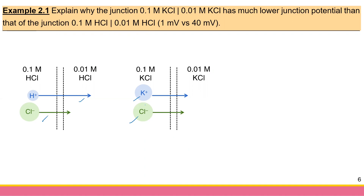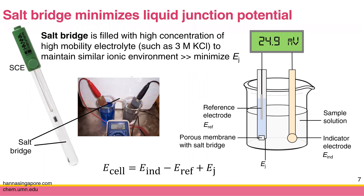There is one way to minimize junction potential: use a salt bridge filled with a high-concentration, high-mobility electrolyte such as 3 molar KCl — an electrolyte with similar-sized ions like potassium and chloride. The reference electrode has a reservoir at the end that can be filled with this high-concentration KCl solution. Similarly, in a cell with liquid junction you also put a salt bridge with high-concentration electrolyte to minimize junction potential.